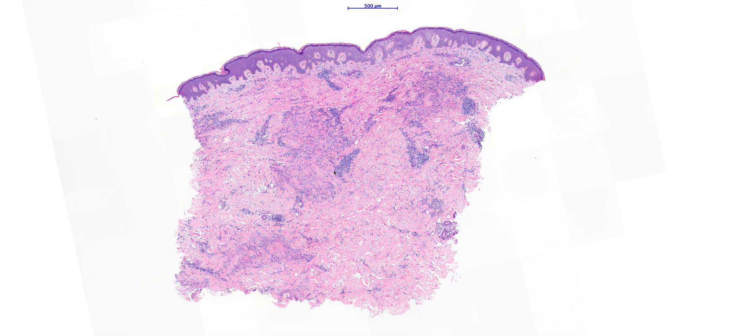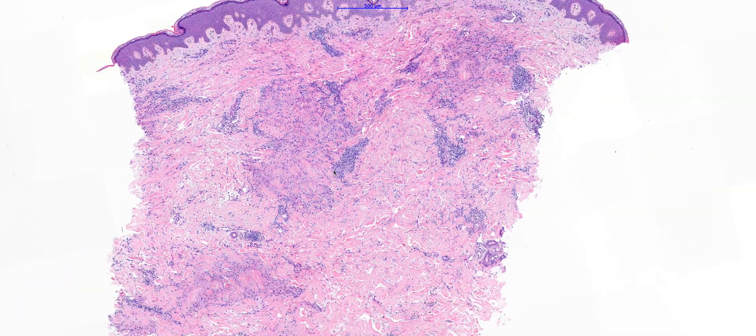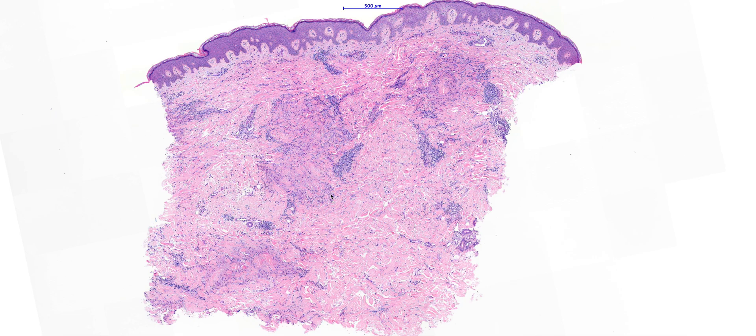In granuloma annulari, you typically get rather smaller, multiple foci of necrobiosis in the dermis. Whereas in necrobiosis lipoidica, the necrobiosis tends to be much more extensive and arranged in more parallel tracks within the dermis, often parallel to the epidermis. The associated inflammatory infiltrate in necrobiosis lipoidica quite characteristically also contains plasma cells, which you tend not to see so much in granuloma annulari.